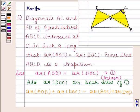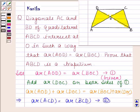Area of triangle AOD plus area of triangle DOC equals area of triangle ACD. Similarly, area of triangle BOC plus area of triangle DOC equals area of triangle BCD. Let us name this as equation two.